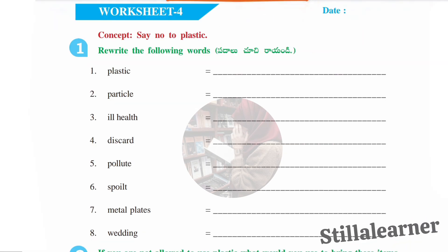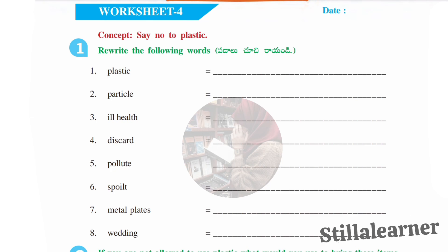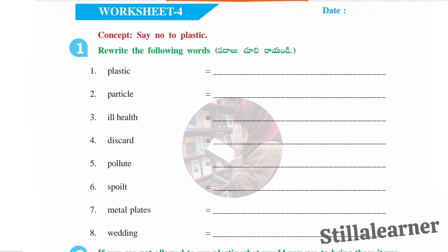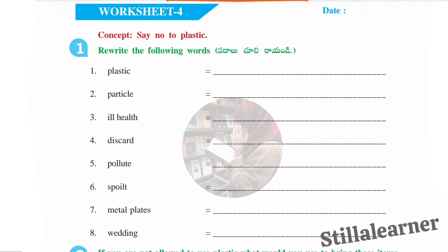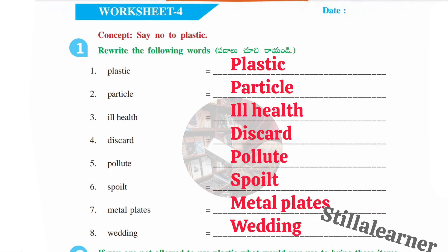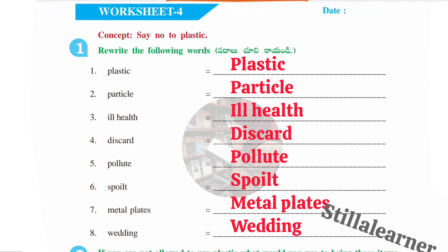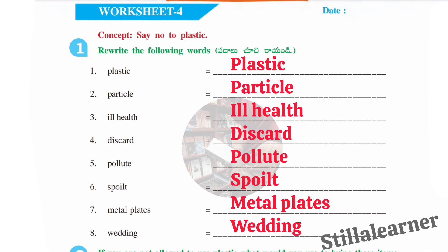Now we'll move to Worksheet 4 — the concept is 'Say No to Plastic.' From this concept we have eight words to rewrite, and you also need to learn the spellings: plastic, particle, ill health, discard, pollute, spoiled, metal plates, and wedding.